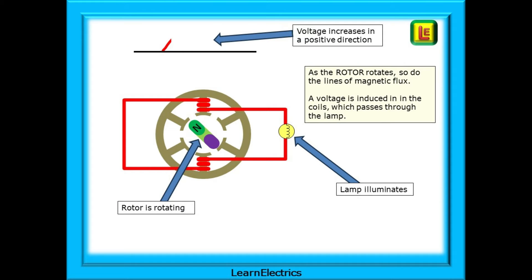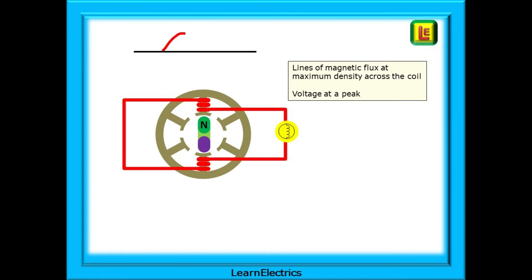Now the rotor has turned clockwise by a few degrees. As it does this, it's moved closer to the red coils. The magnetic flux lines from the magnetic rotor will cut across the coils and generate some electricity. The voltage begins to increase in a positive direction and the lamp begins to illuminate. The rotor moves further and is now at a maximum interaction with the coil, meaning that the lines of magnetic flux are cutting across the coil at their maximum density. The voltage has reached a peak value and the lamp is at its brightest.